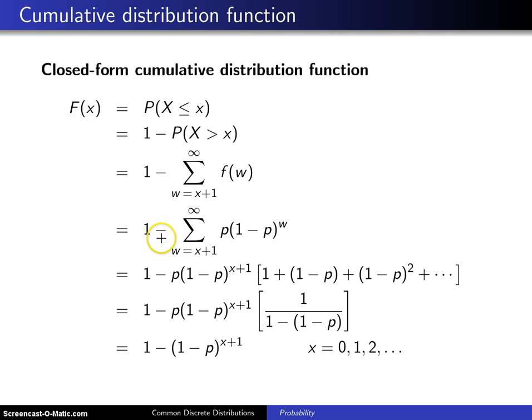Then this becomes 1 minus the same summation as before. We simply replace our probability mass function with what we know it to be from the previous slide.